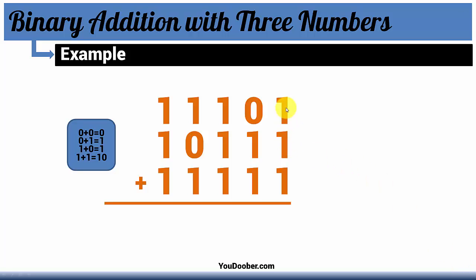So here we have 1 plus 1, and that equals 10. So we put our 0 down and carry our 1. And we always carry our 1 to the next column.